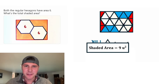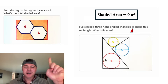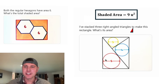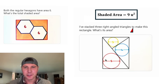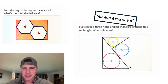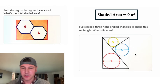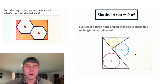Luckily, this one didn't take very long because we're trying to catch up. And here's the next challenge. It says: I've stacked three right-angled triangles to make this rectangle. What is the area? We have three right triangles with three inscribed circles with diameters 3, 4, and 5. This looks like it'll be a fun one.